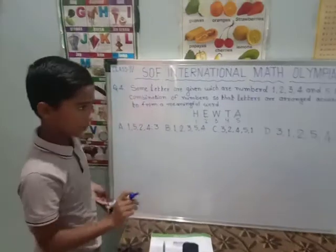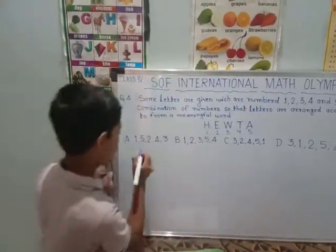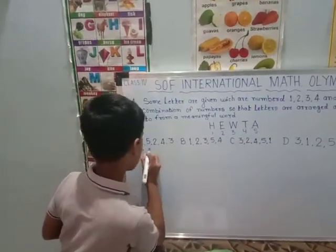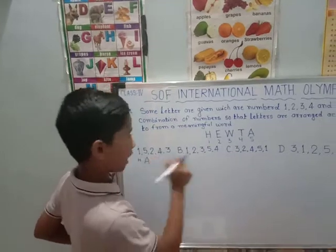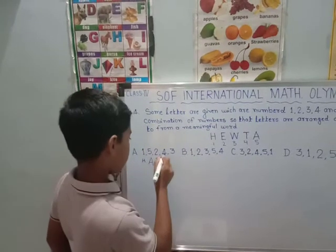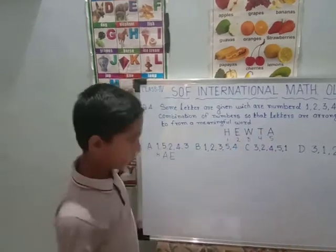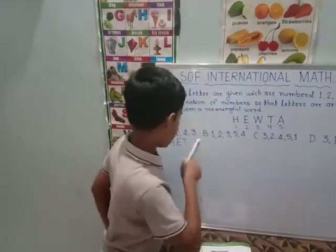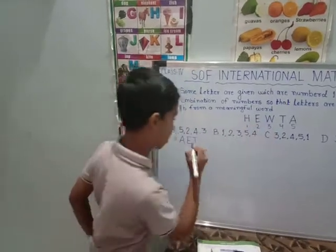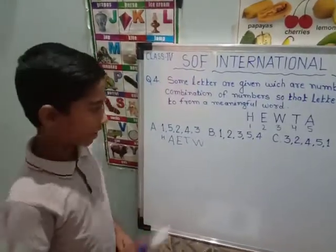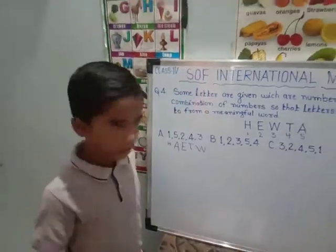Now we will make a meaningful word. We will see the first option. First letter is H (1), fifth is A, second is E, fourth is T, and third is W. Now we will see if it is a meaningful word or not. It is not a meaningful word.